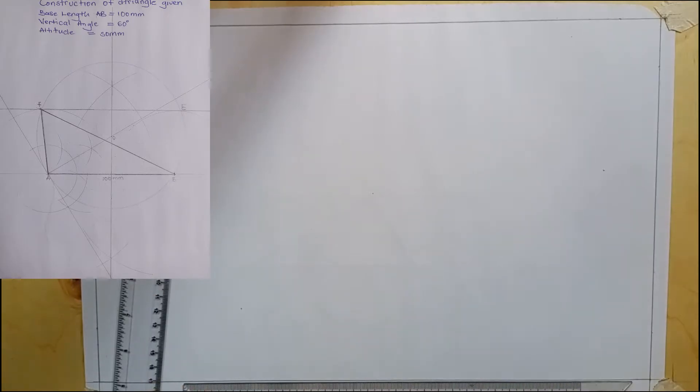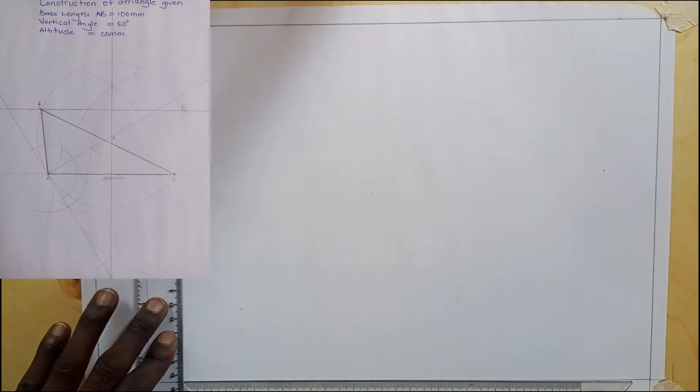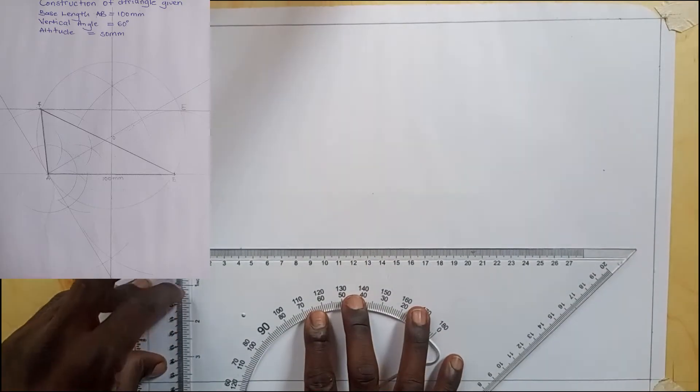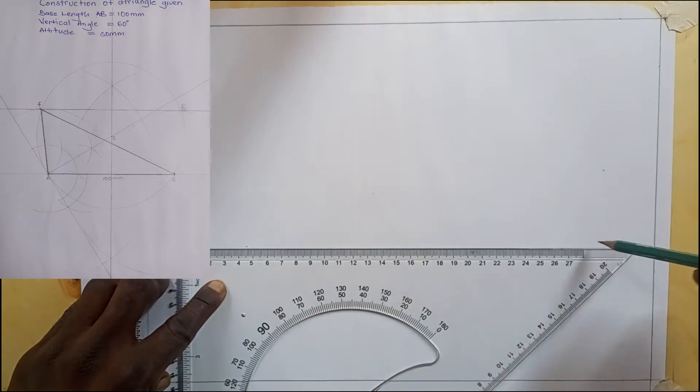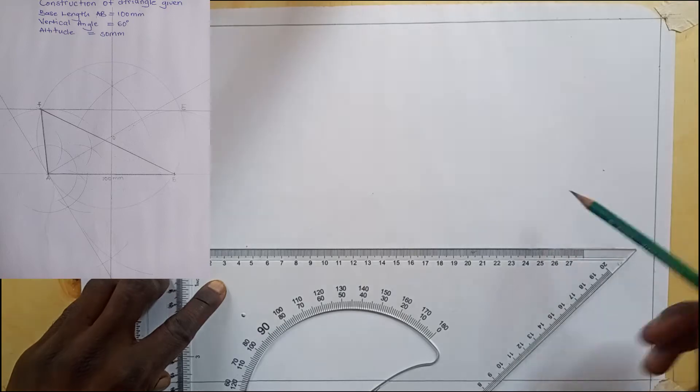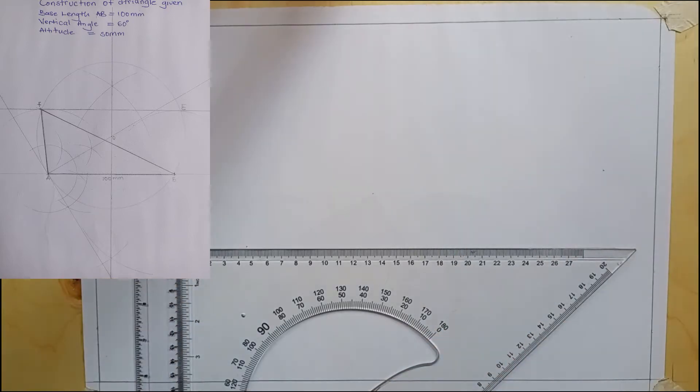I'm going to draw a horizontal line parallel to one of the borders. In this case, our vertical angle will be 60 degrees, the base length will be 100 millimeters, and the altitude will be 50 millimeters. So let's get started.